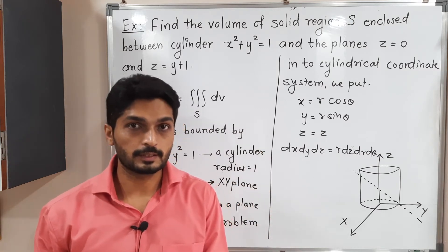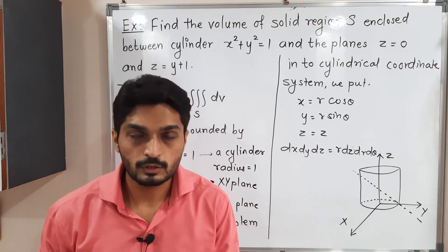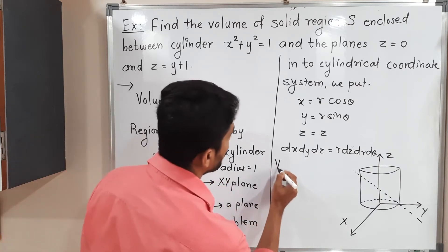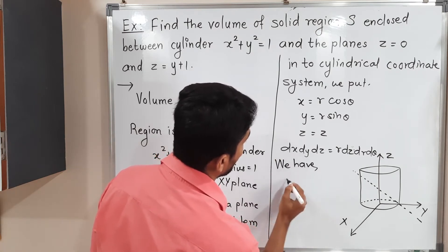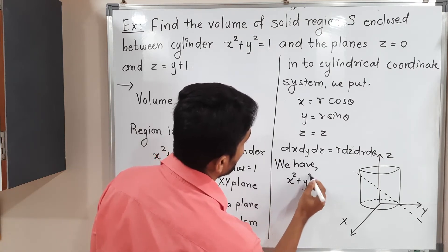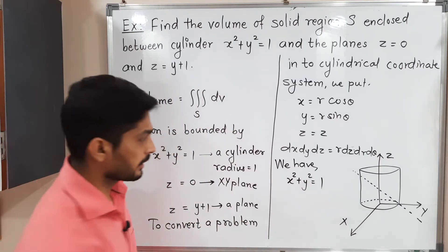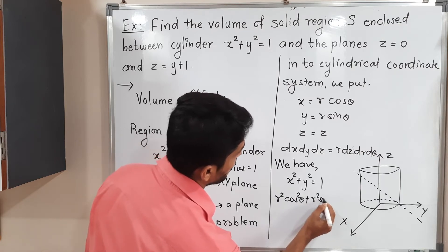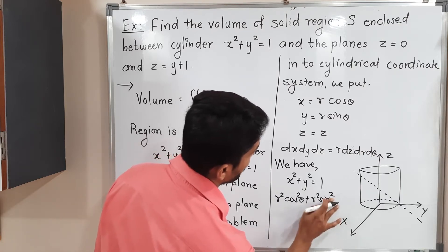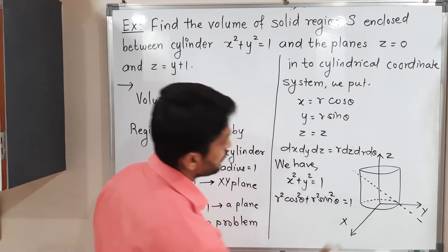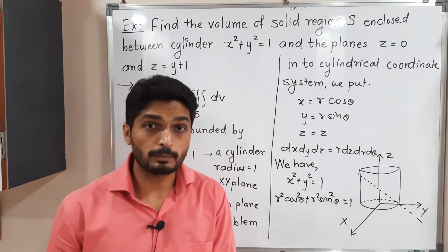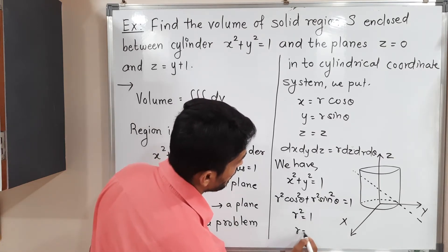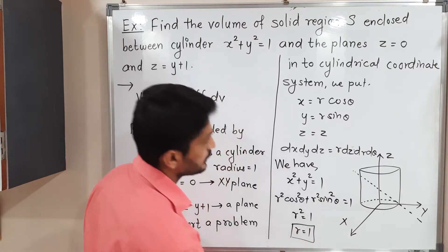Our first task is to convert all equations into cylindrical coordinates. For x² + y² = 1: substituting x = r cosθ and y = r sinθ gives r²cos²θ + r²sin²θ = 1, so r²(cos²θ + sin²θ) = 1, which gives r² = 1, thus r = 1. This is the equation of the cylinder.